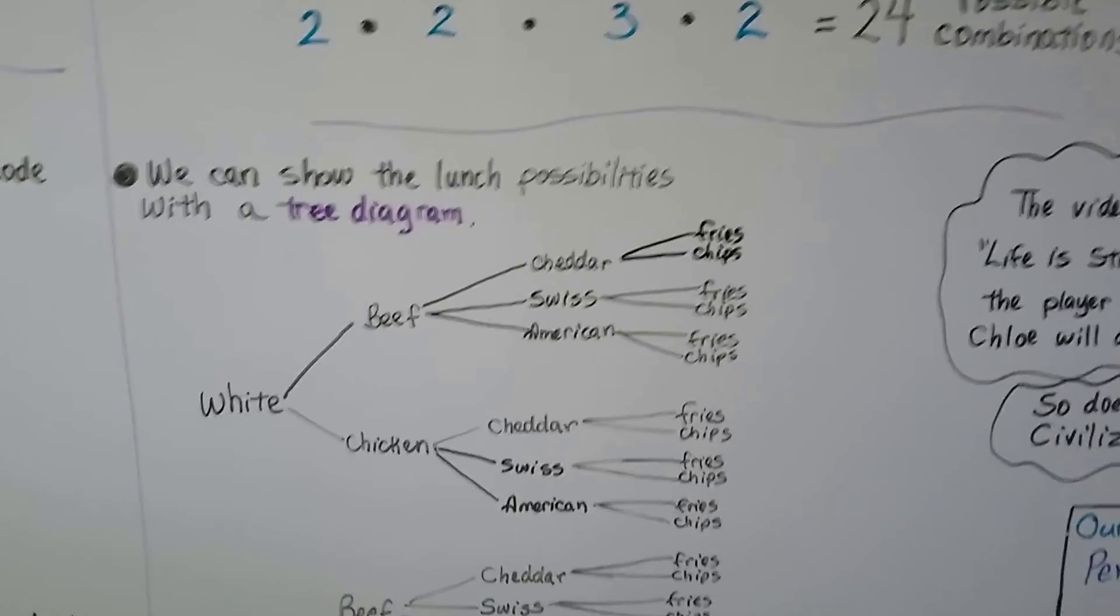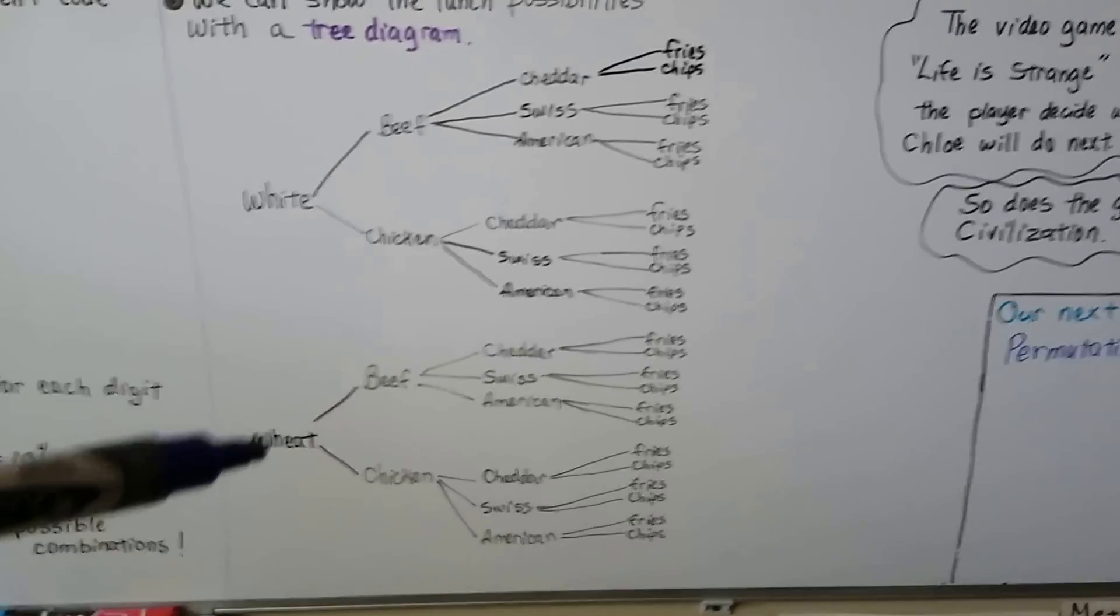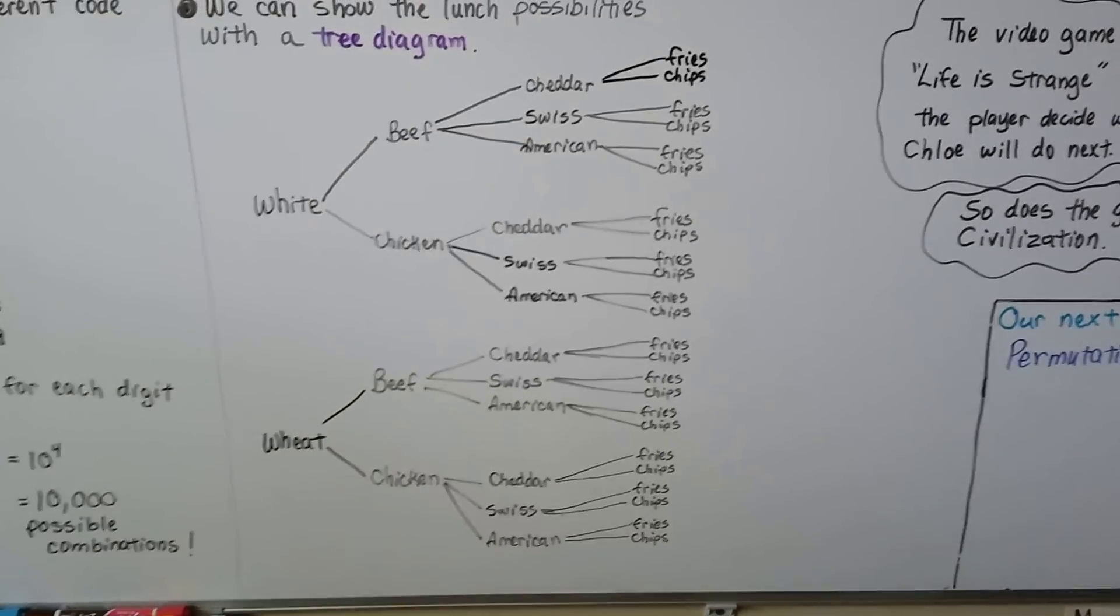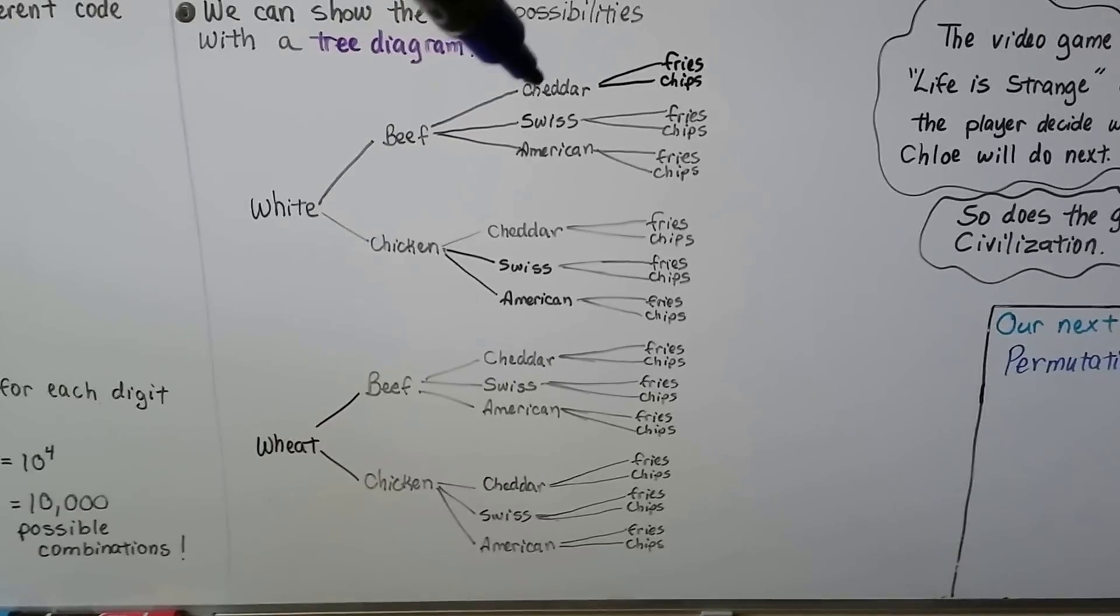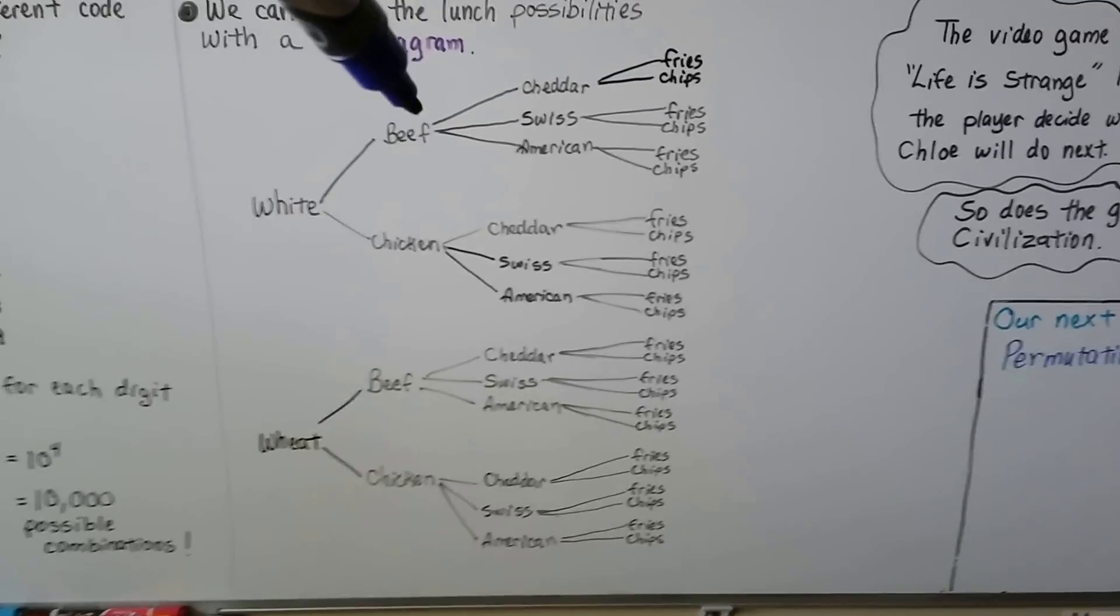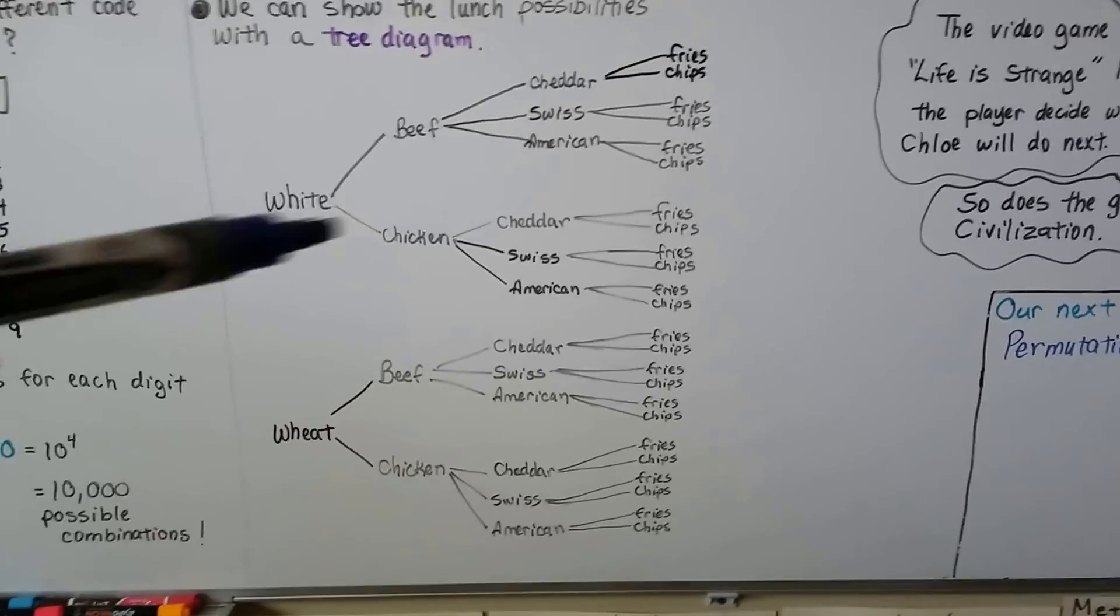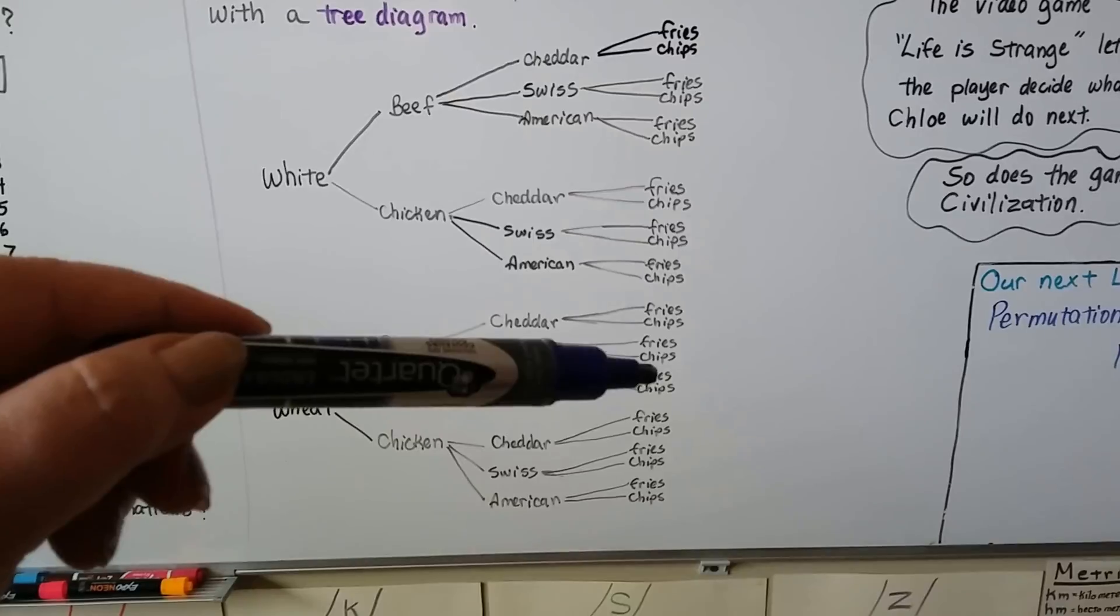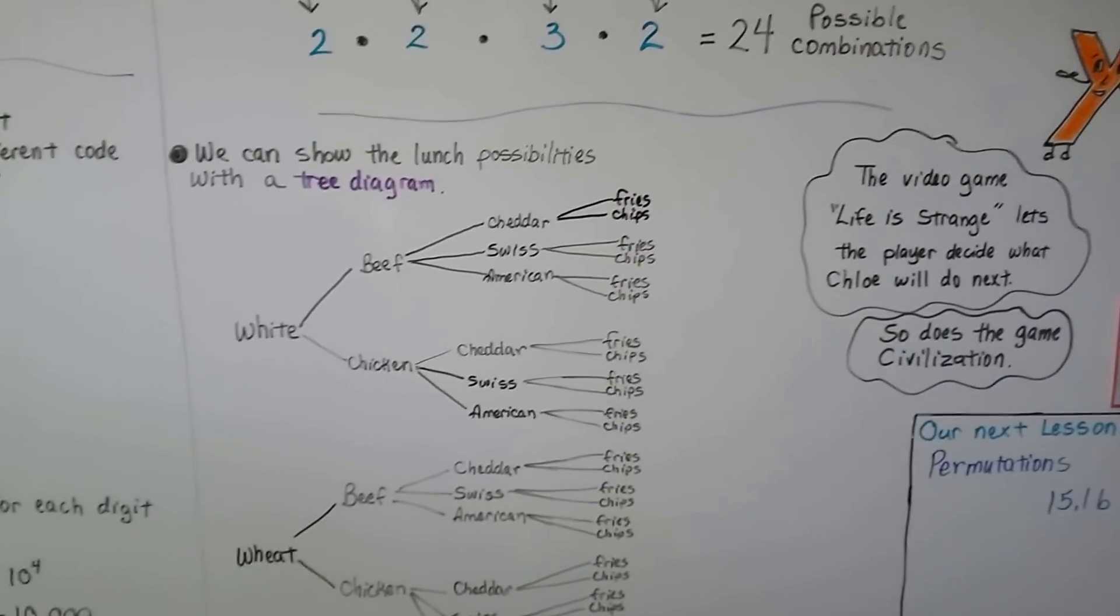And we can show the lunch possibilities with a tree diagram. So here are the choices of white or wheat bread. And depending on what the person chooses, it's going to go a different path. If I choose white bread with beef meat, with cheddar cheese, and fries, well then I'll be going along here. But what if I chose beef with American cheese and chips? And if you count these, we have 2, 4, 6, 8, 10, 12, 14, 16, 18, 20, 22, 24. 24 possible combinations.